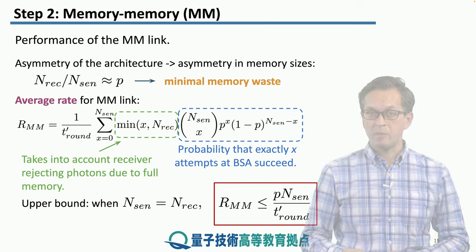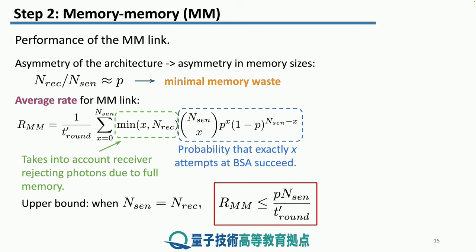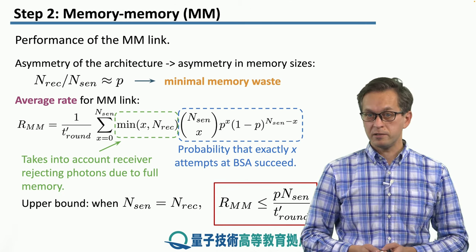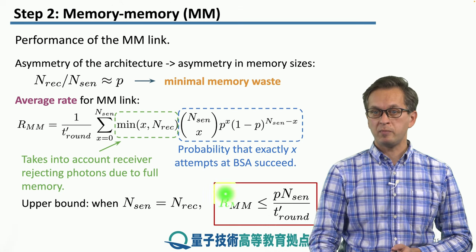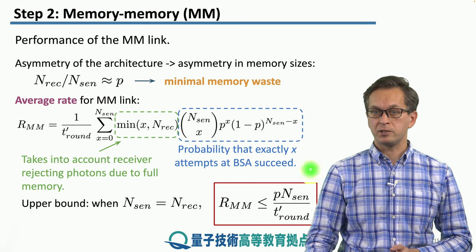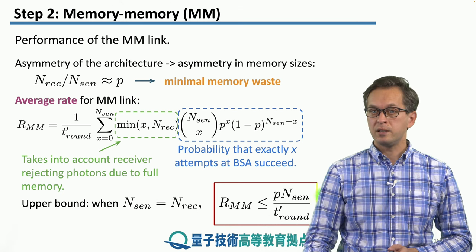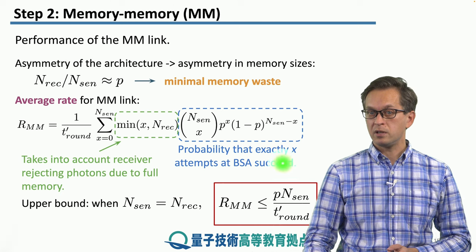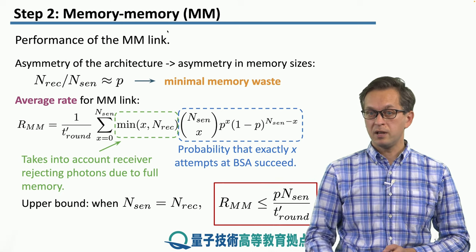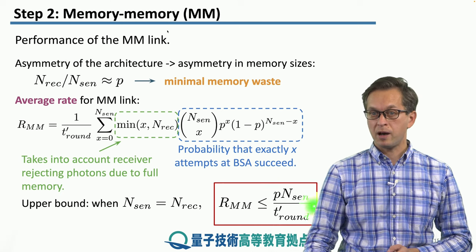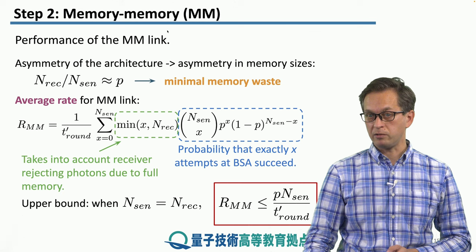The upper bound is given when the number of memories is the same in both repeaters, and is upper bounded by the following expression: the average number of photons that succeed at the Bell-state measurement, divided by the duration of the round.